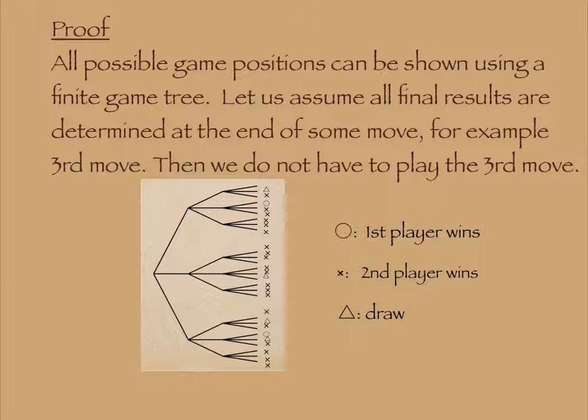Proof. All possible game positions can be shown using a finite game tree. Let us assume all final outcomes are determined at the end of some move, for example at the end of the third move.